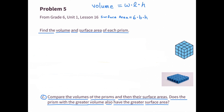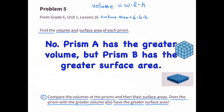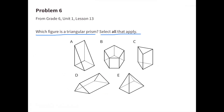Part C: Compare the volumes and surface areas of the prisms. Does the prism with the greatest volume also have the greatest surface area? Prism A has the greater volume, but Prism B has the greater surface area. Number 6: Which figure is a triangular prism? Select all that apply. Figures A, C, and D are all triangular prisms.